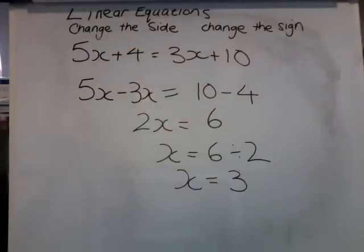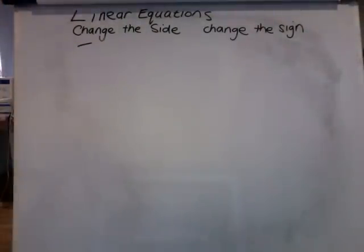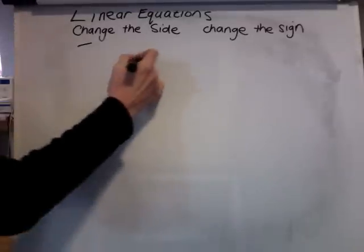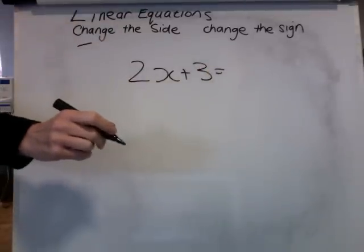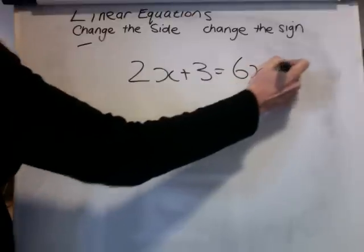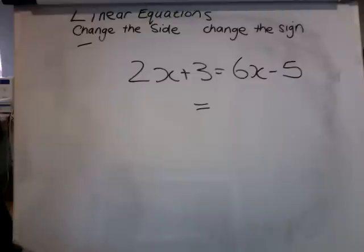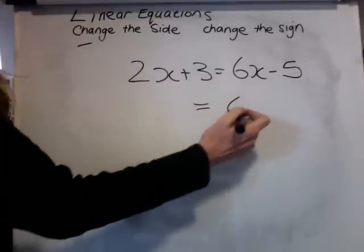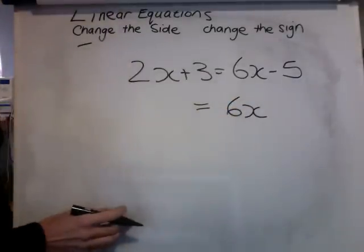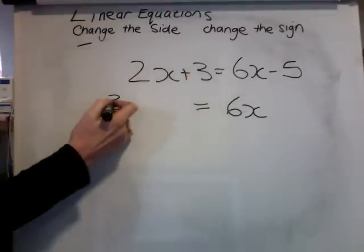Let's have a look at another one. There we go. So 2X plus 3 equals 6X minus 5. Decide which side we want the X's on. 2X on this side, 6X on that side. We'll have the X's over here, so the X's can stay where they are. On this side we're having numbers, so the 3 can stay where it is.